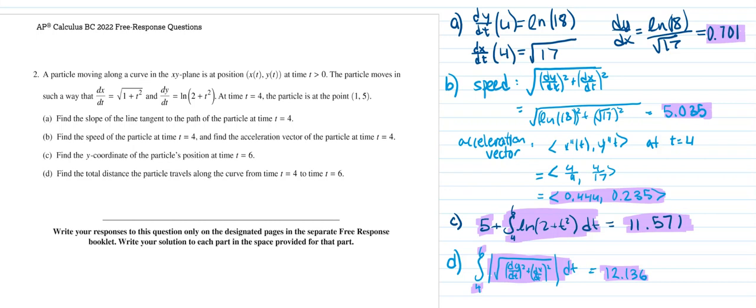Part B asks to find the speed of the particle at t equals 4 and the acceleration vector at t equals 4. For speed, I plugged t equals 4 into the formula for speed: square root of (dy/dt)² plus (dx/dt)². I used the previous dx/dt and dy/dt values and calculated the answer: 5.035.